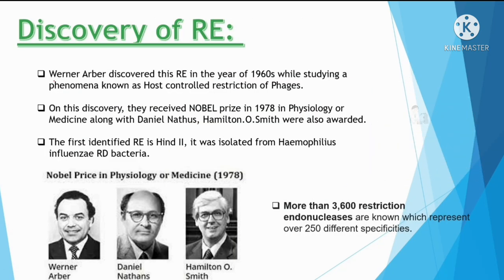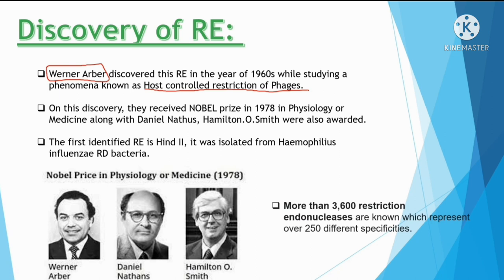The discovery of restriction endonucleases: Werner Arber discovered restriction endonucleases in the 1960s while studying a phenomenon known as host-controlled restriction of phages. Based on this discovery, Werner Arber, Daniel Nathans, and Hamilton Smith were awarded recognition for their work.